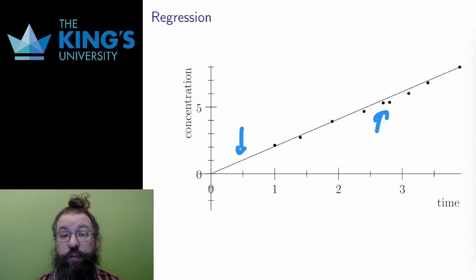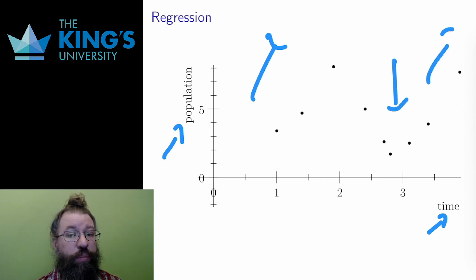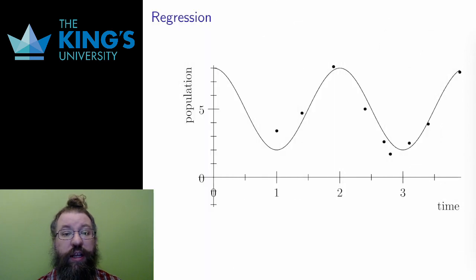Here is a set of data of population depending on time. This population is clearly not linear like the last model. Instead, it is going up and down. I could try to guess a polynomial. Maybe a degree 3 or degree 4 polynomial can have this shape. However, I'm going to guess a trig function. Maybe this population oscillates like a sine or cosine function. I can draw such a function through these points and get what might be a reasonable model.